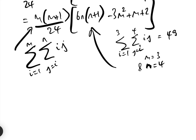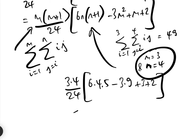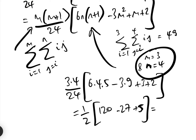Let's see what we get. Putting it in: 3 times 4 over 24, times 6 times 4 times 5 minus 3 times 9 plus 3 plus 2, which equals 12 over 24 — that's one half — times 120 minus 27 plus 5, which equals 49. And hey presto, we have 49. The formula is correct.